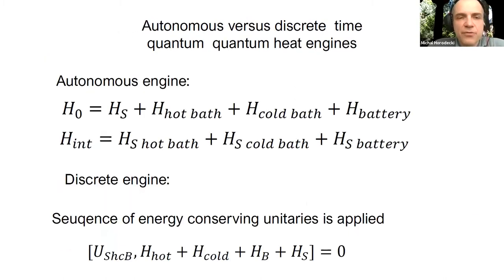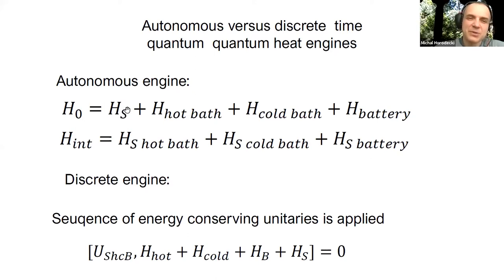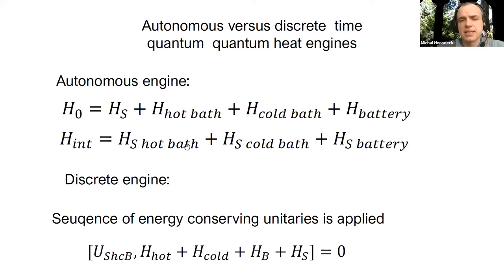There are many possible configurations for quantum engines. I mentioned a classification into autonomous engines and discrete engines. An autonomous engine has a time-independent Hamiltonian which is always on—we have the Hamiltonian of the working body S, the baths, the battery, and an interaction Hamiltonian, so this working body interacts simultaneously with the hot bath, cold bath, and battery.